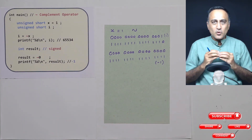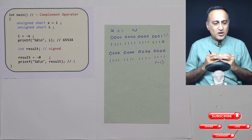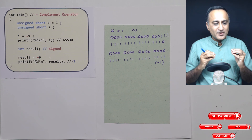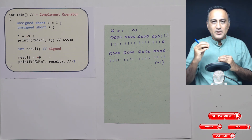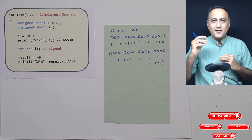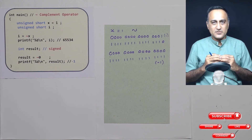So this should have given you a good idea about how to effectively use the complement operator. Complement means flip the bits — ones become zeros and zeros become ones.